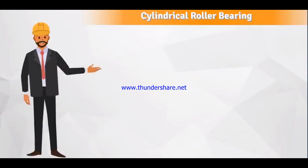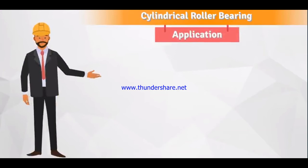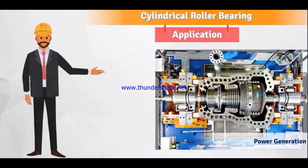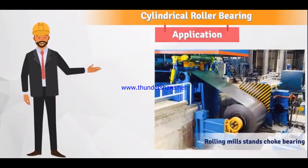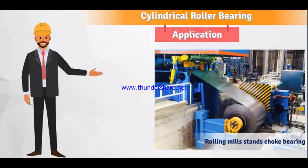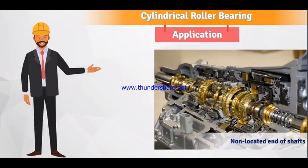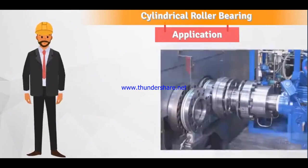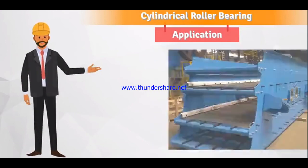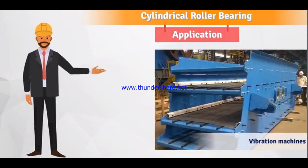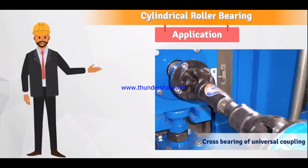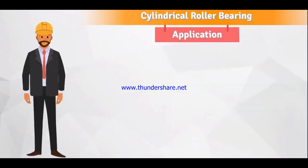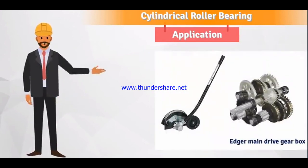Cylindrical roller bearings are used in several places: in power generation, in oil field mining and aggregate processing, in rolling mill stands as choke bearings for supporting work rolls and backup rolls, in non-located ends of shafts of gear boxes, in machine tool transmissions, in vibration machines, in wheel set bearings for rail vehicles, in cross bearings of universal couplings of cardan shafts, and in edger main drive gear boxes of HSM.